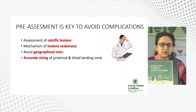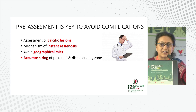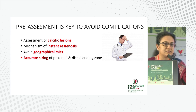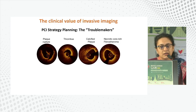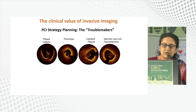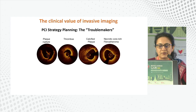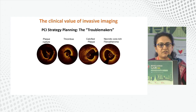What are the pre-assessment keys to avoid complications? As already mentioned, calcific lesions are difficult to treat. The second most important is understanding the restenosis mechanism, because without it we may not give a good result. Geographical miss and accurate sizing are the most important keys. If you ask about PCI strategy troublemakers, these are the four troublemakers in pre-assessment that we have to be worried about.